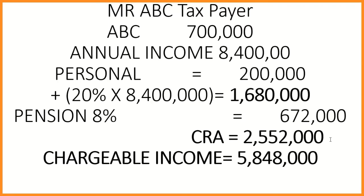The total of all our reliefs — RSA consolidated relief allowance — gives us roughly 2.5 million. When we take 2.5 million away from 8.4 million, we arrive at 5,848,000 Naira as chargeable income. This 5.848 million will be subject to tax rates. This is how to determine chargeable income. The first question has also been answered: income earners — sole proprietors, executors, and those personally liable to tax — pay PAYE.